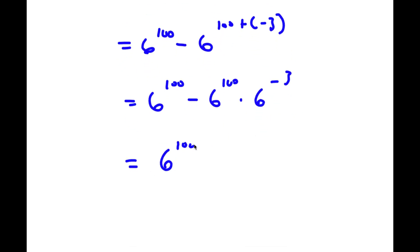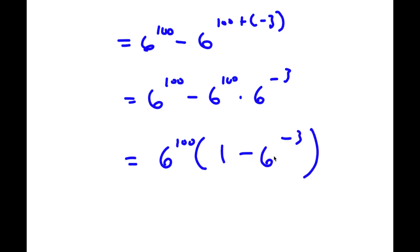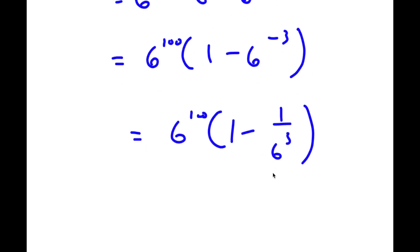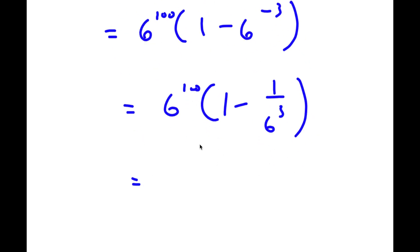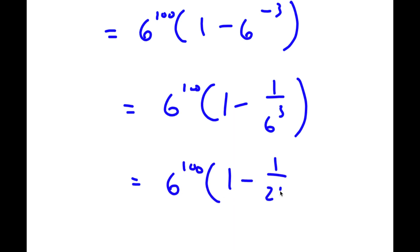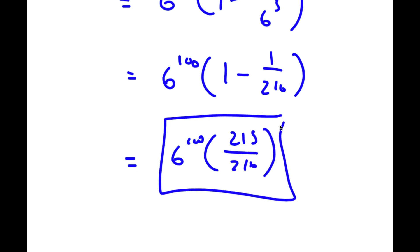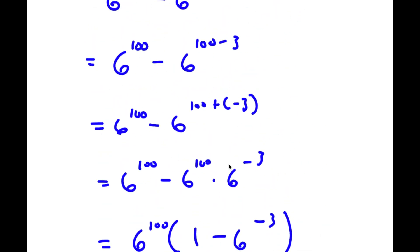From here, if I factor out 6 to the power of 100, I get 6 to the power of 100 times 1 minus 6 to the power of negative 3. And 6 to the power of negative 3 is the same thing as 1 over 6 to the power of 3. Now remember, 6 to the power of 3 equals 216. So now I have 6 to the power of 100 times 1 minus 1 over 216. And 1 minus 1 over 216 is equal to 215 over 216. So 6 to the power of 100 times 215 over 216 is another way to write our answer.